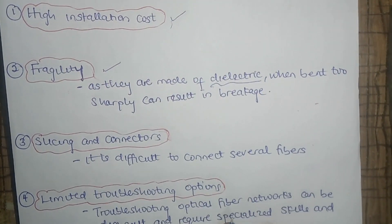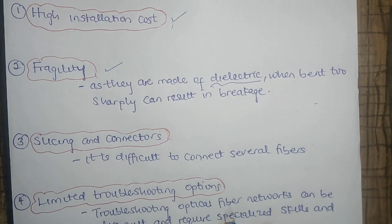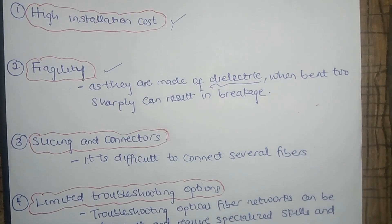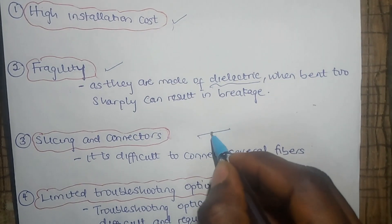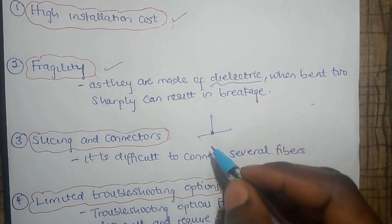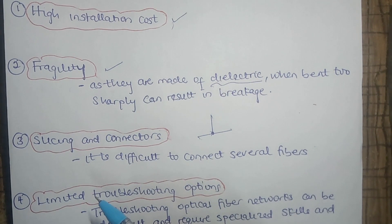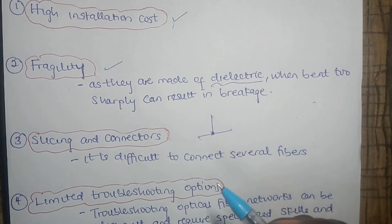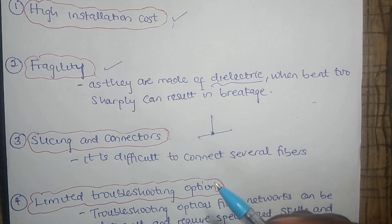The third disadvantage is splicing and connectors. We said that one advantage is that it is quite difficult to tap, which results in high security. But in cases where you really want to connect several fibers together, splicing is quite difficult — it's not easy. And we need connectors, which are also costly, building up the overall cost.